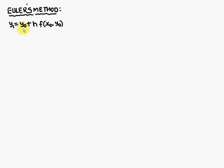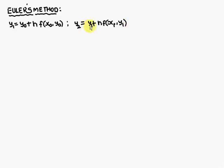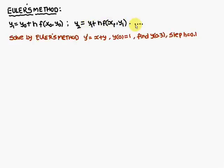Euler's method states: y1 is equal to y0 plus h into f of x0, y0. Similarly, y2 is equal to y1 plus h into f of x1, y1. Similarly, y3 is equal to y2 plus h into f of x2, y2.